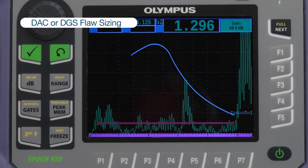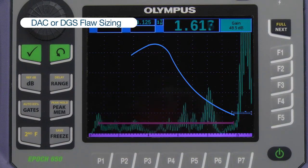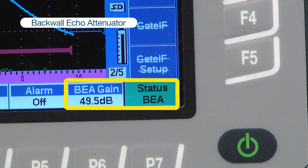In some cases, flaw sizing techniques such as DAC or DGS are used in combination with software options like backwell echo attenuator, in order to develop an acceptance-rejection criteria.